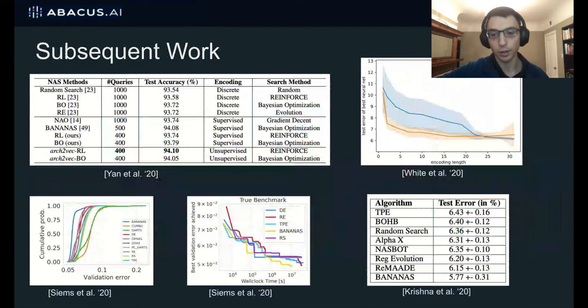And other work also ran Bananas in other settings, for example, NAS bench 101, but with many more queries as the budget for these NAS algorithms than what we tried. And there's also subsequent work that gives more experiments with the different encodings to try. And this work also verified that truncating the path encoding still gives strong performance.